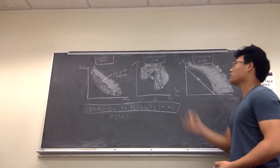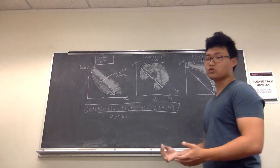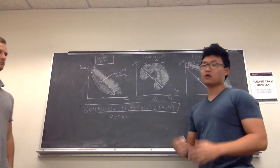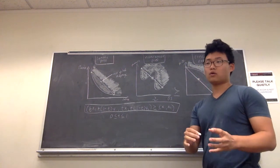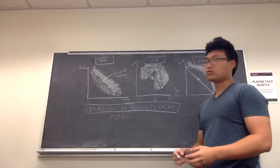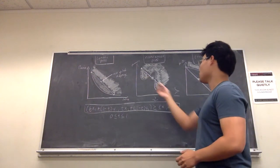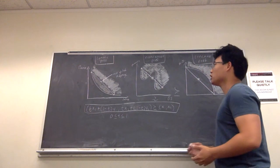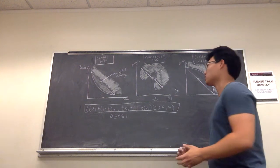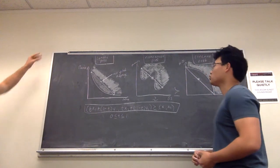Moving on to non-convex preferences: these are two goods where the consumer would prefer having a little bit more of one good than the other and vice versa, but does not want equal amounts of the two goods. An example of non-convex preferences are peanuts and orange juice, where the consumer would like to have a little bit more peanuts and less orange juice, and vice versa, rather than having a weighted average of the two.